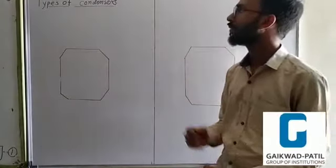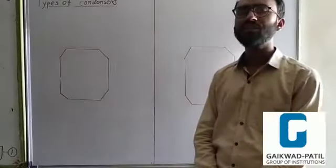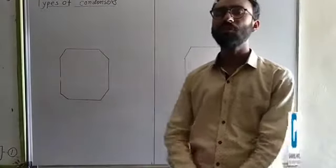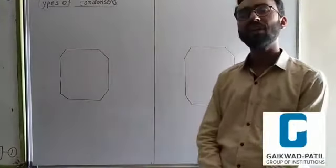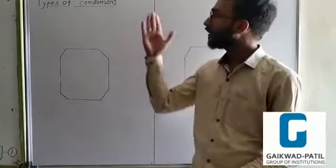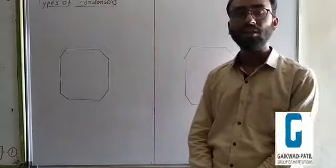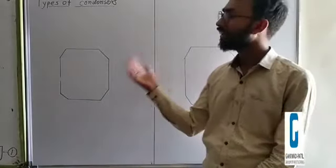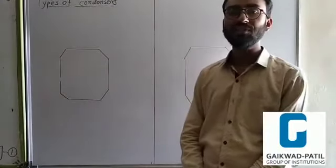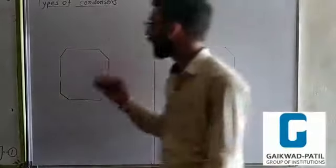First, we will discuss about what is a condenser. A condenser is used in the thermal power plant. What is the function of the condenser in the thermal power plant? It converts the exit steam from the turbine into liquid — that means it causes a phase change.